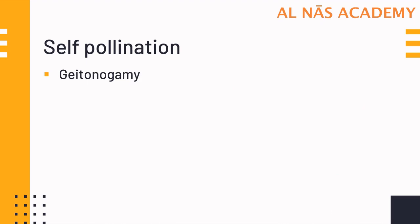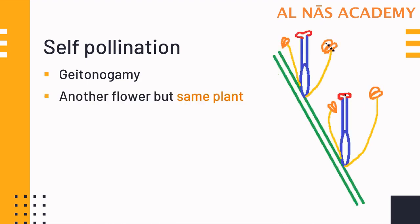In geitonogamy, it is the transfer of pollen from the anther of one flower to the stigma of another flower, but of the same plant. So the transfer of pollen is from the anther of one flower to the stigma of another flower of the same plant — the plant should be the same but the flower will be different.